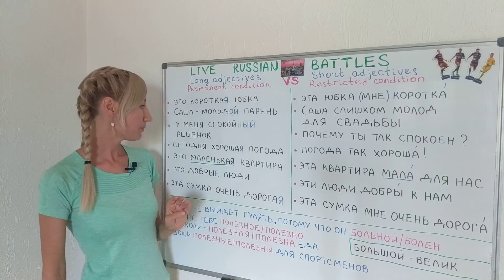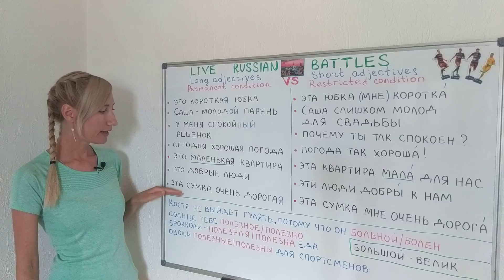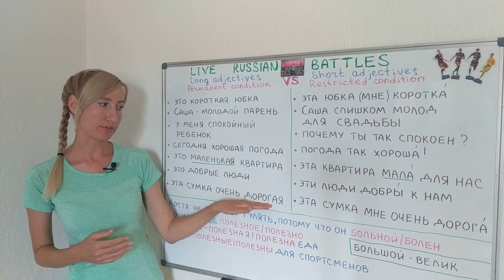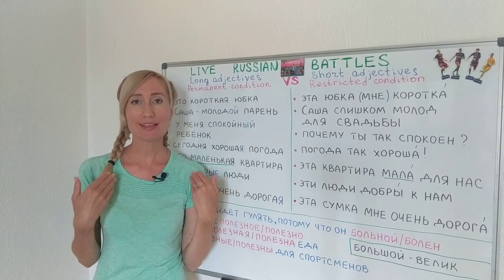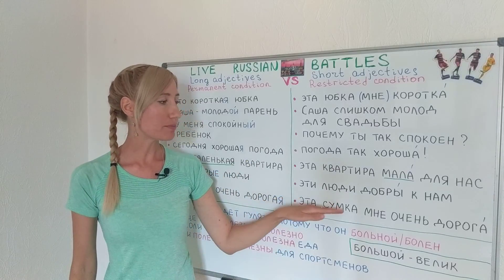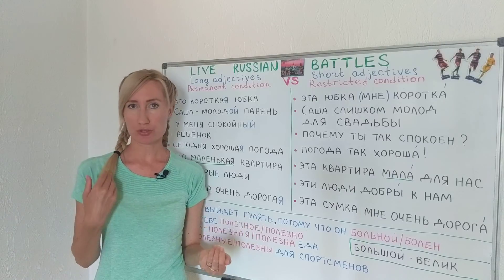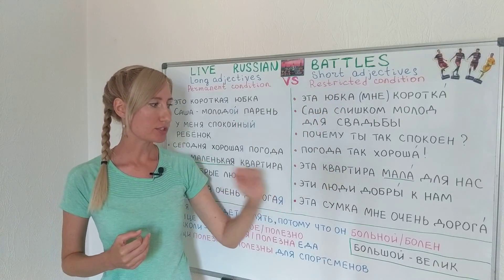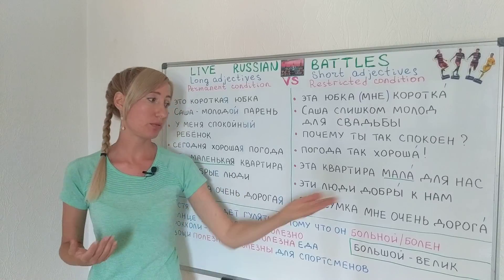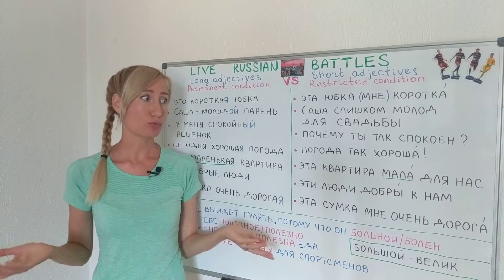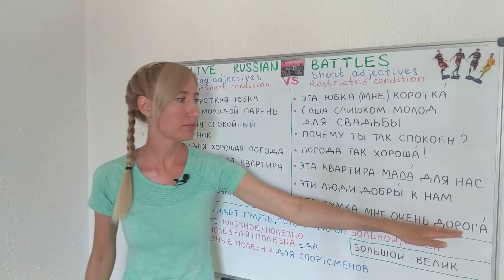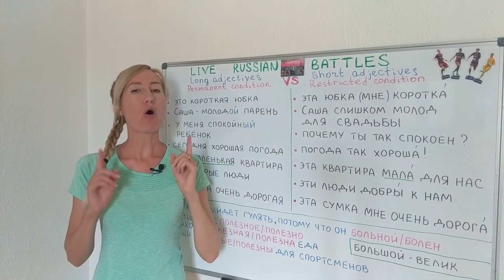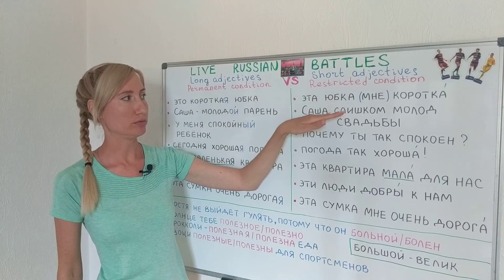The last example: this bag is really expensive. Compare with эта сумка мне дорога — this bag is really precious to me. Here дорога means precious, again a restricted condition. It's precious to me; maybe for someone else this piece of leather would mean nothing, but for me it's very precious — дорога.